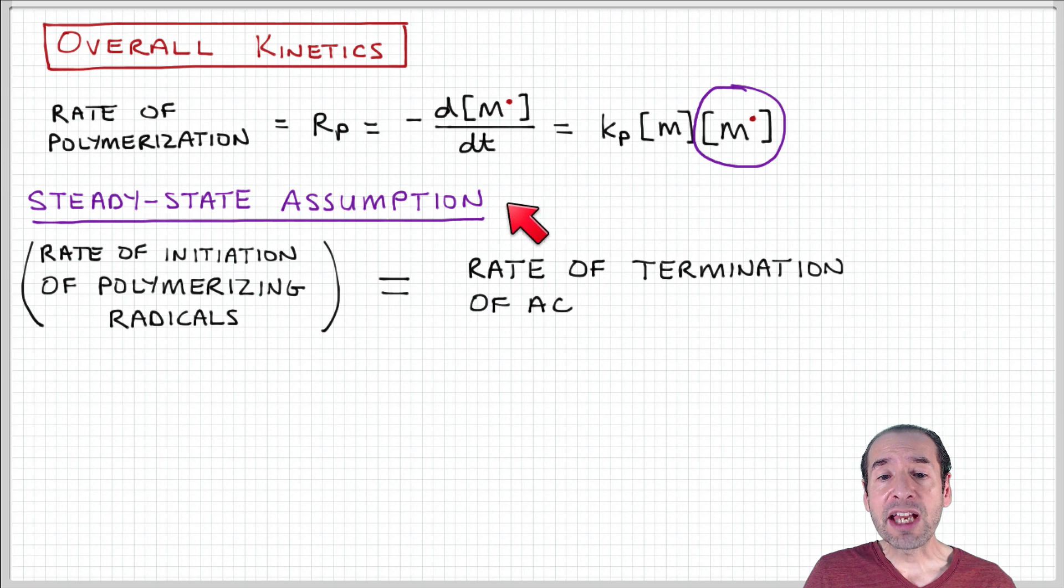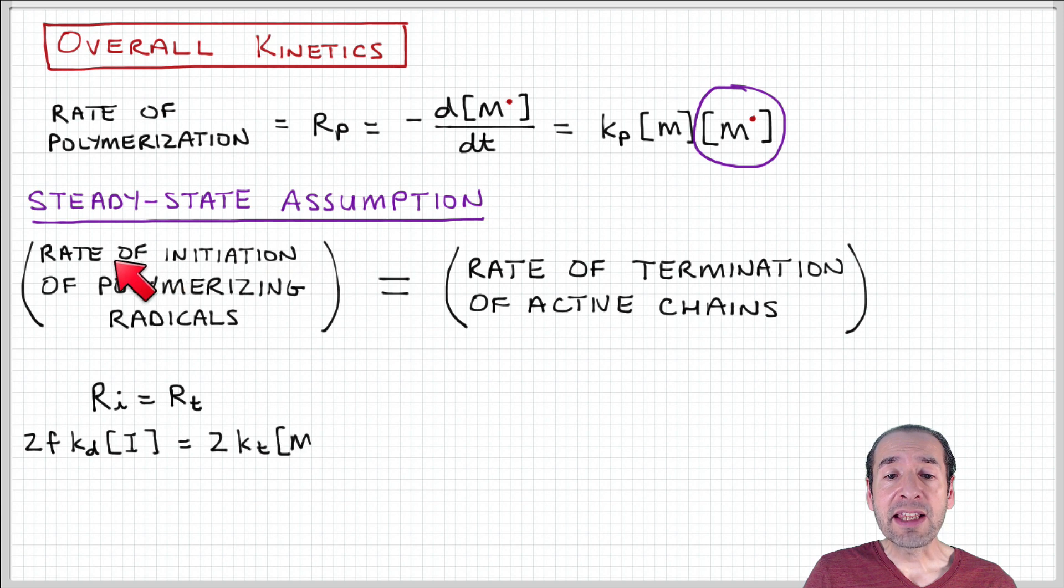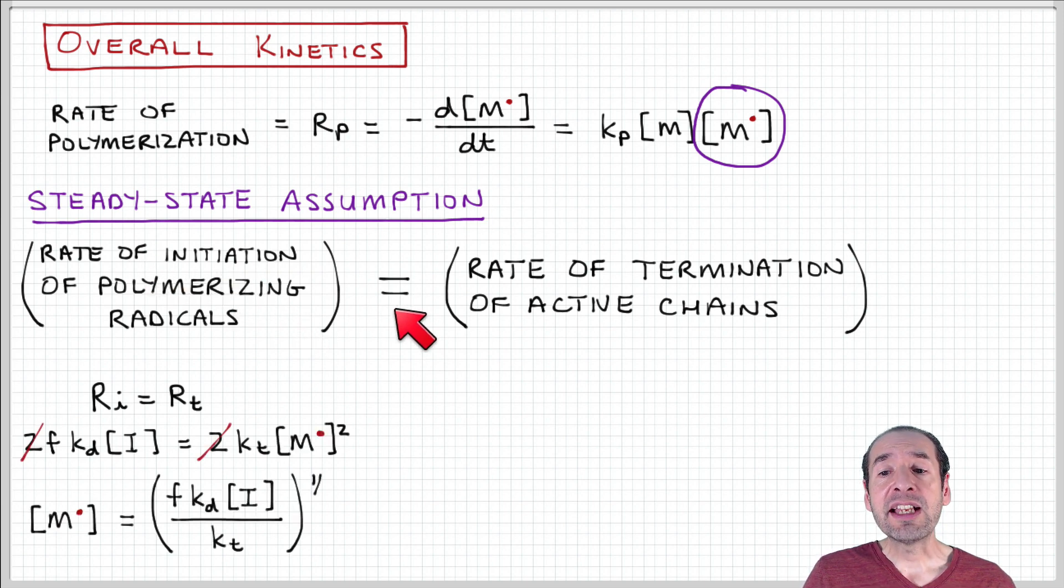One way to do that is what's called the steady state assumption. Here we're going to say that the rate of initiation of polymerizing radicals is equal to the rate of termination of active chains. In other words, the rate of initiation is equal to the rate of termination.